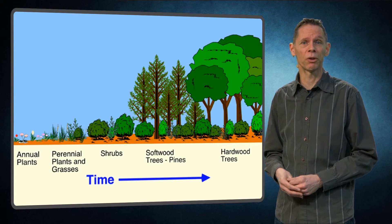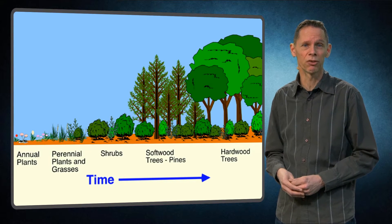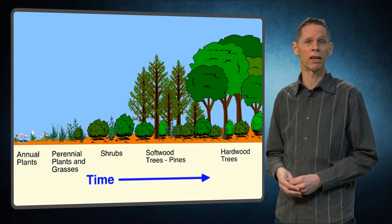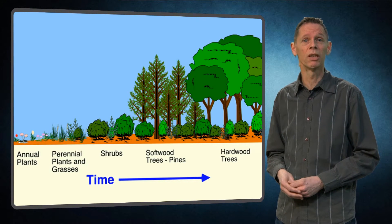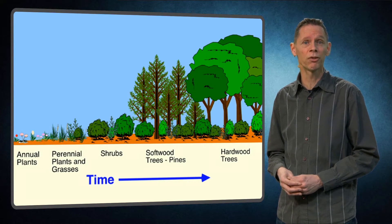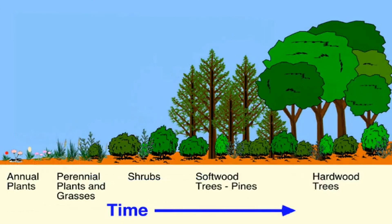Terrestrial pioneer plant species often are annual species. They ameliorate the environment so that secondary succession species can start establishing themselves too. These secondary succession species are often perennial plants such as herbs and small woody plants. They are followed by shrubs, and the final stage of succession, generally called the climax stage, often contains trees.